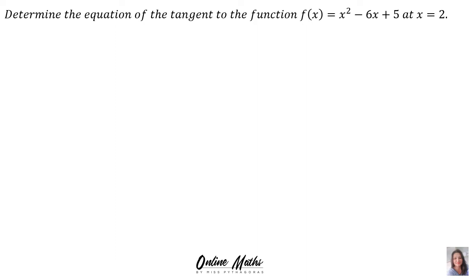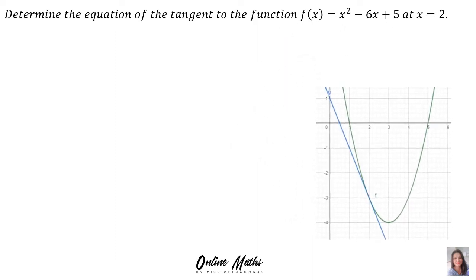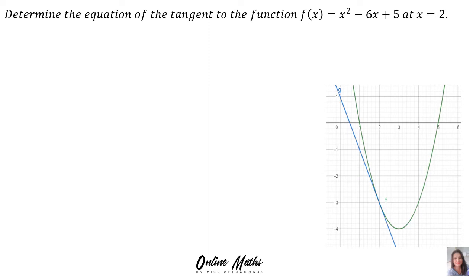Let's determine the equation of the tangent to the function f(x) = x² - 6x + 5 at x = 2, following the four-step plan. Here is the sketch — it's a parabola, and at x = 2 we find the tangent. We are finding the equation of the tangent, which is a straight line, and we are working towards y = mx + c.